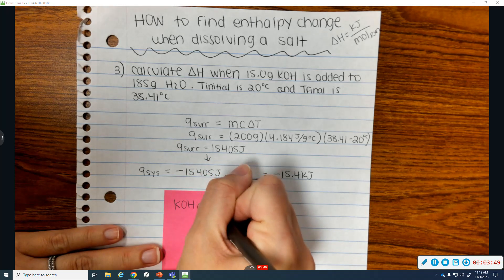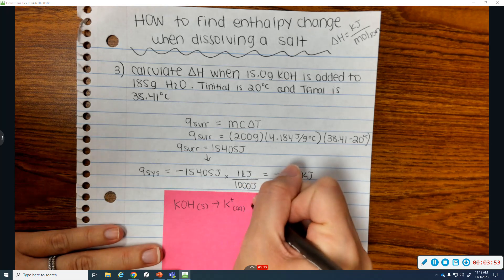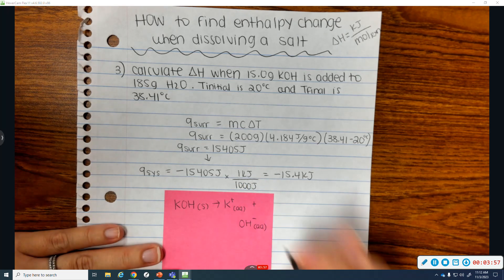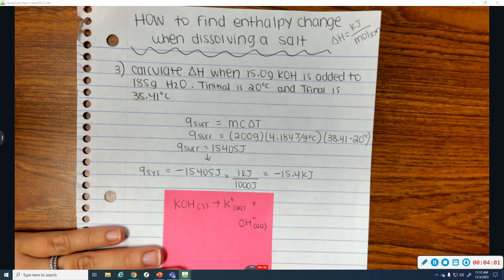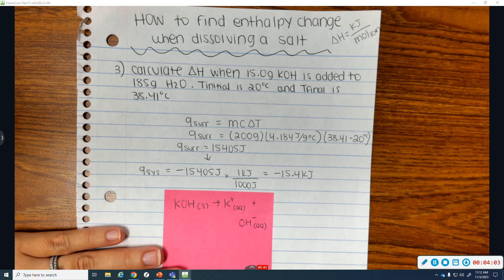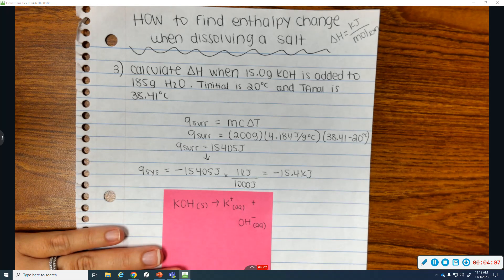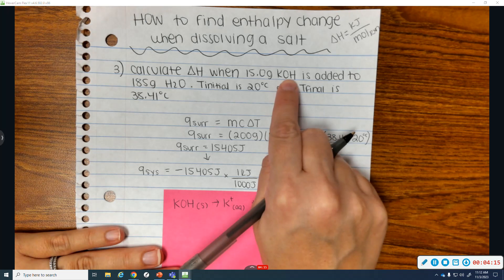KOH solid becomes a K+ ion, that's aqueous now, and an OH- ion, that's aqueous now. That's the equation. You don't actually add water to a dissolving chemical reaction when you're writing the equation. And so the moles I'm going to divide it by, well, the only thing that I have in my equation is KOH. So it's going to be divided by moles of KOH.